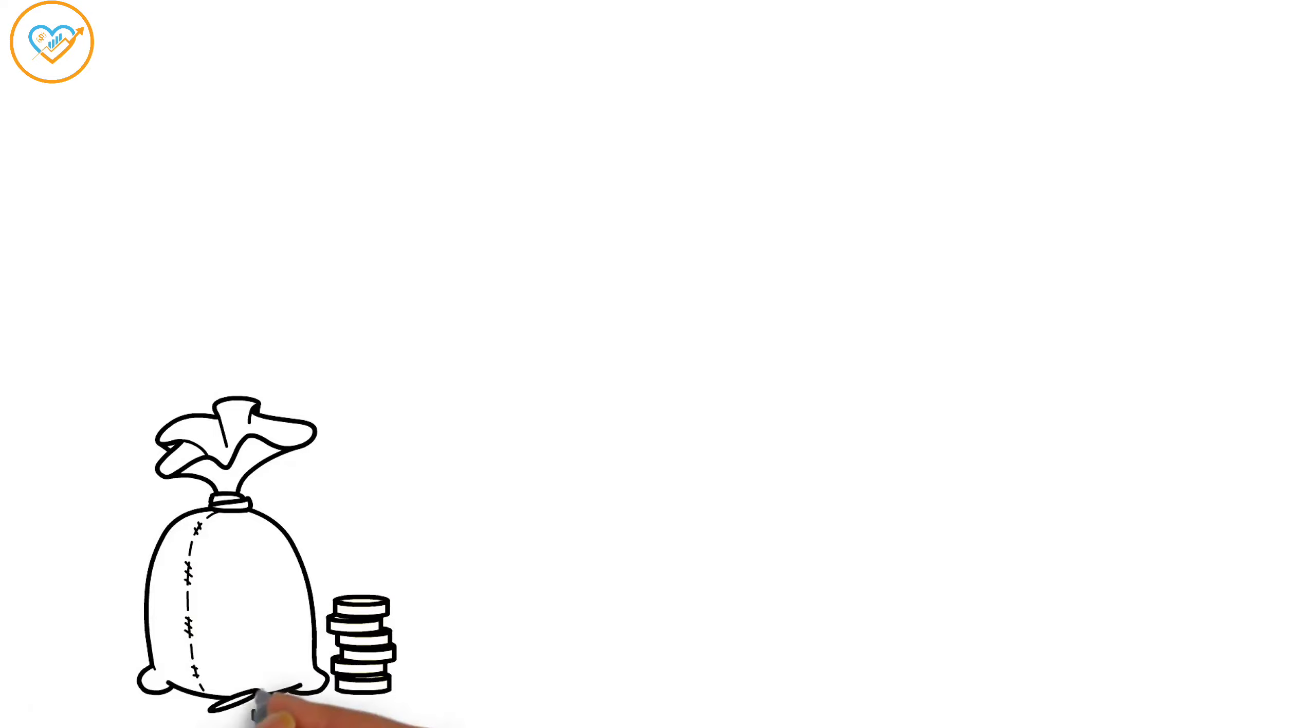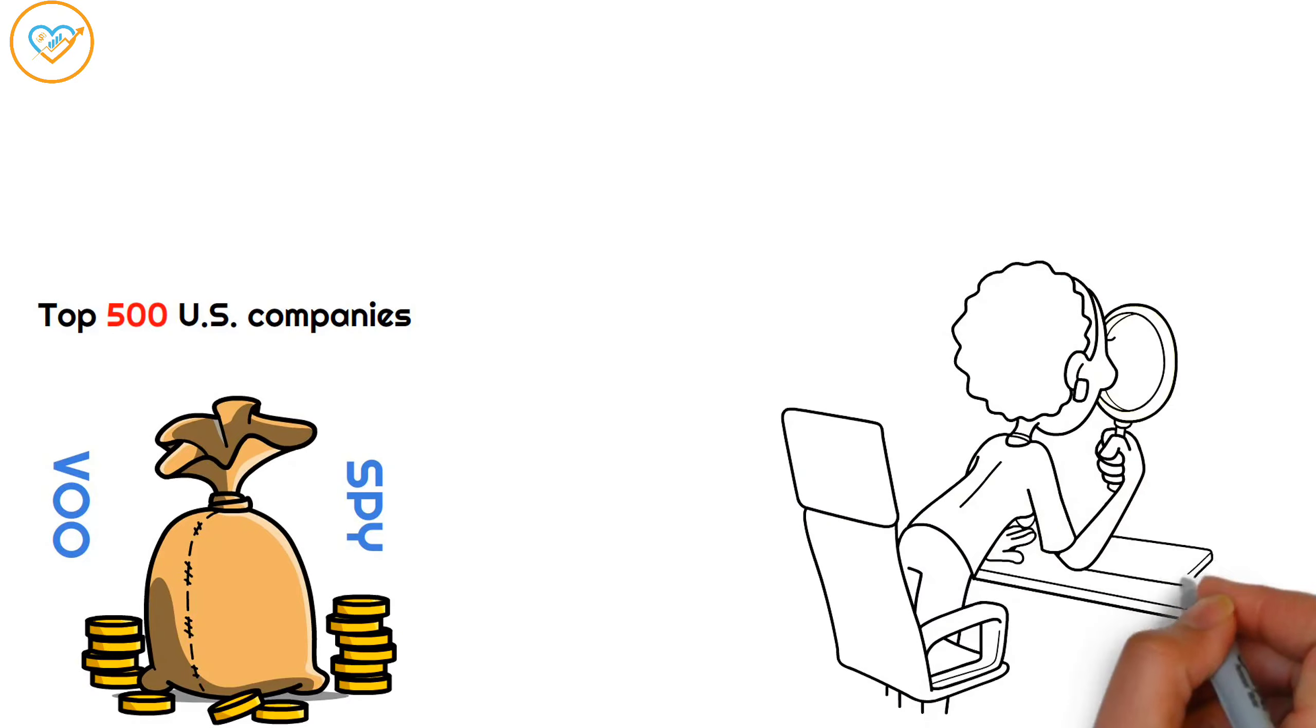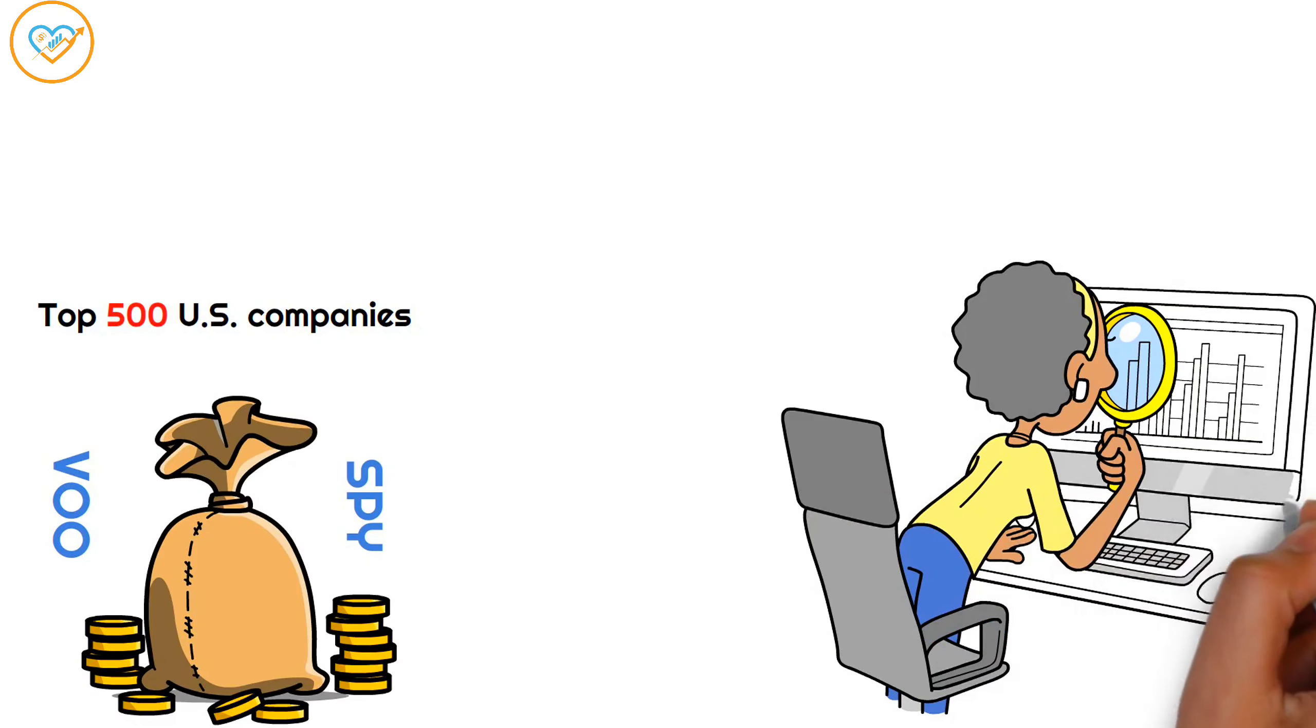Starting out, you might consider general market funds like VOO or SPY, which track the top 500 U.S. companies. These are reliable options, mirroring the ups and downs of the overall economy.